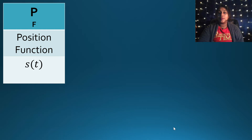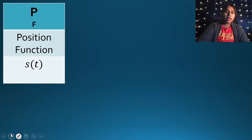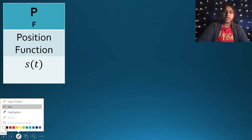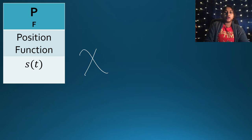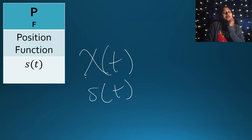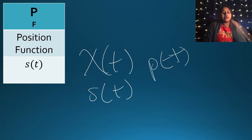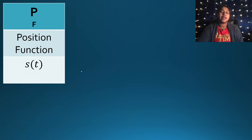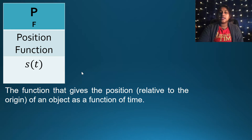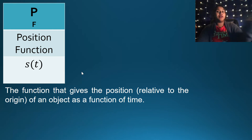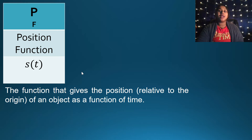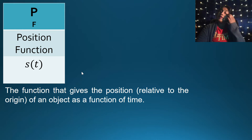The position function is written as S of T. It can also be written as X of T. You won't see it as P of T, which is a common misconception. Position tells us about the location of a particle or object relative to the origin with respect to time — our variable is always time with these particle movement questions.